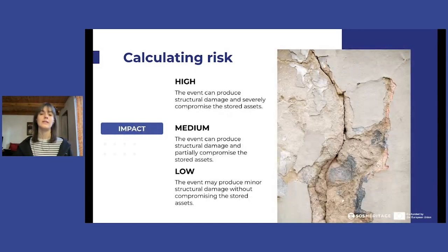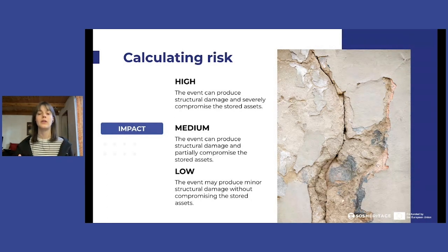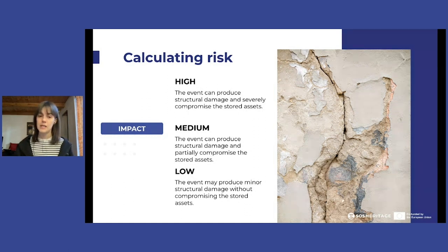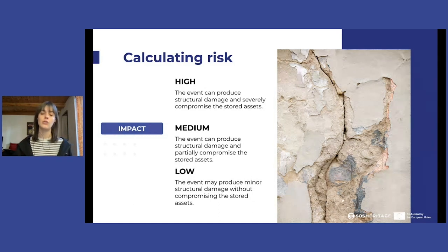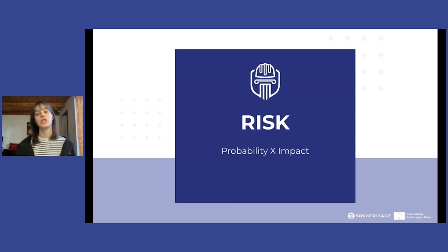The second variable is the impact that a threat could have on the assets being analyzed. It could be high if the event can produce structural damage and severely compromise the stored assets, for example through complete destruction. It could be medium if the event could produce structural damage and partially compromise the assets, or low if the event would produce only minor damage without compromising the life cycle of the stored assets. To calculate the risk, we do a product of these two variables — probability and impact.